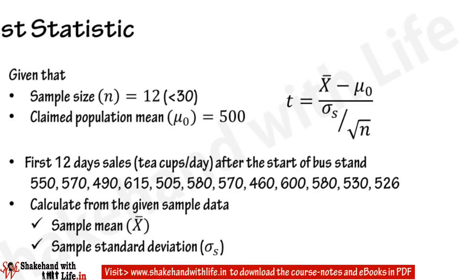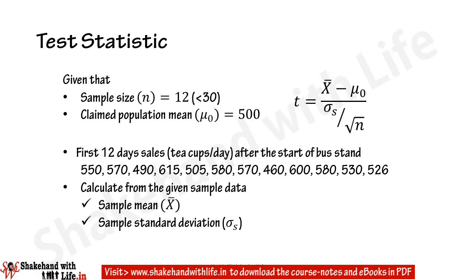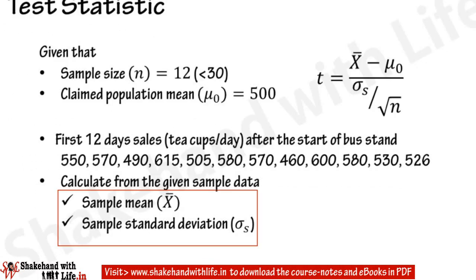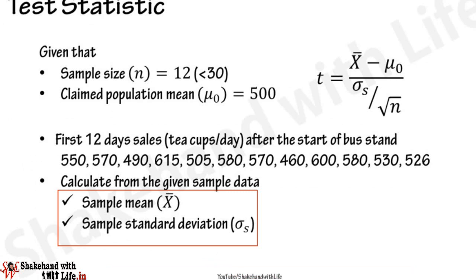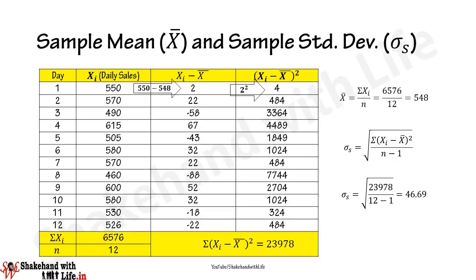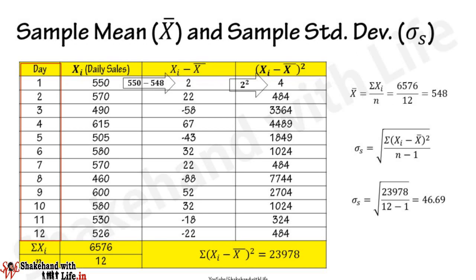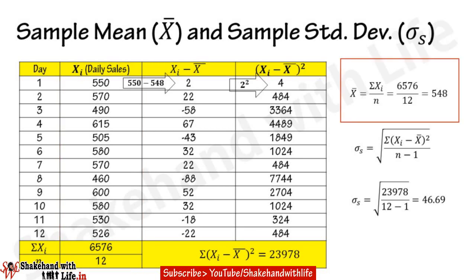Before processing the T-statistic, calculate the sample mean and sample standard deviation from the given sample data. In the table, the first column lists the number of days, and the second column lists daily tea cup sales. The sample mean x-bar equals the sum of daily sales divided by the number of days — given by x-bar equals sigma-xi divided by n — which comes out as 548 tea cups per day.